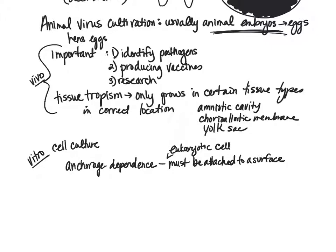The first characteristic is anchorage dependence — the eukaryotic cell must be attached to a surface. We can't take cheek cells or immune system cells and stick them in a broth culture to swim around and make copies like bacteria. They have to be adhered to a specific type of surface to function, because in the body, cells are anchored to tissues and reproduce from there.